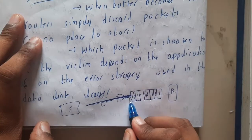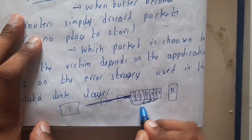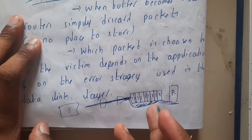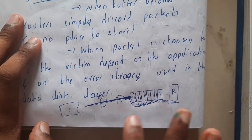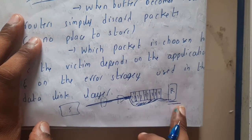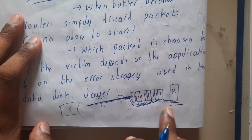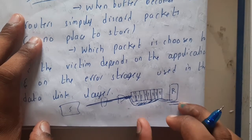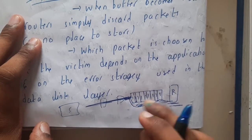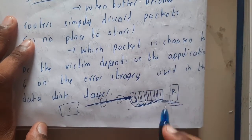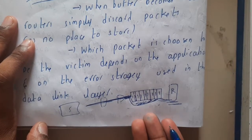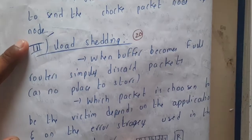Whenever a bit comes, it is stored in the buffer one after the other. According to their speeds, data is stored in the buffer and read by the receiver. This process continues. But what if the buffer is full and congestion is occurring? Should we discard the packets or what should we do? Obviously, we should discard some packets.